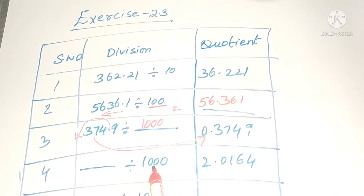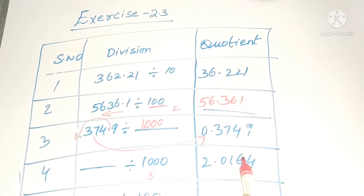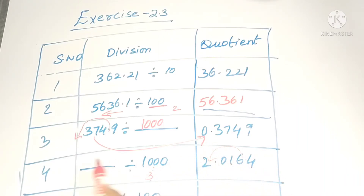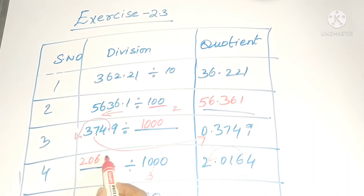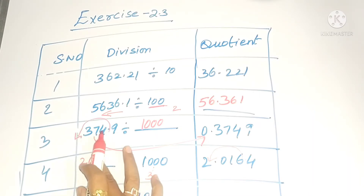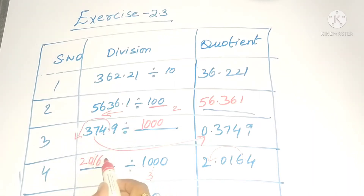When we divide with 1000, the decimal point moves left — three zeros are there so the decimal point shifts three digits. That means we need to find the original position of the decimal point. So the original number would be 2016.4 — that will be the answer.